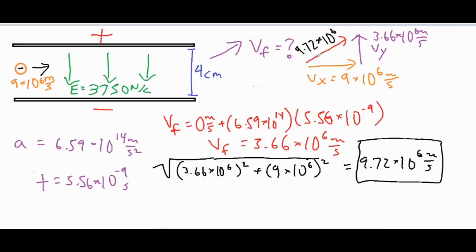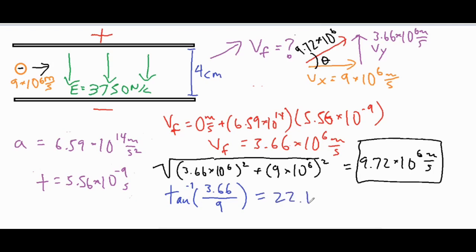Now we find the angle theta. We use the inverse tangent function: the inverse tangent of 3.66 over 9. Tangent is opposite over adjacent, and both components share the same power of 10 to the 6th so those drop off. Plugging that into the calculator gives us 22.13 degrees as the final angle at which the electron exits the capacitor.